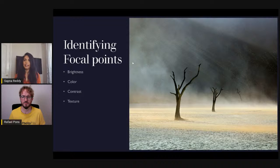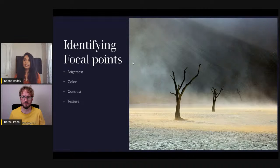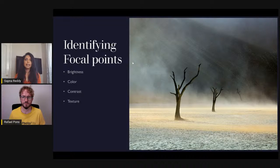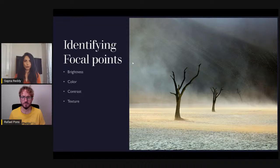For example, in this image taken in Deadvlei — a salt pan created by a dried-up river with graceful dead trees — when the wind kicks up you have sandstorms. The light is streaming in from the top left corner, illuminating the blowing sand. If you ask yourself what the story needs to be about, look where the brightness is, where the color is, where the contrast is. The contrast of those trees makes it immediately clear: this is a story about these trees.